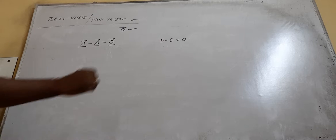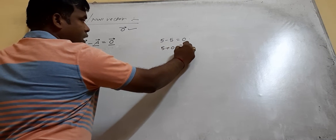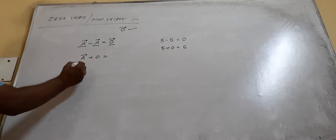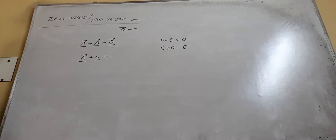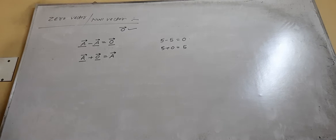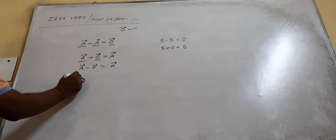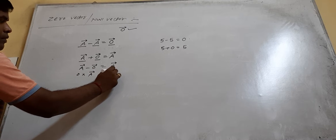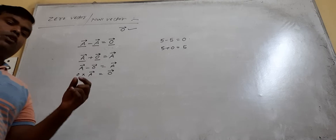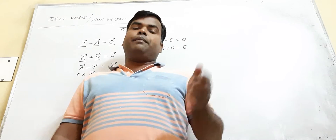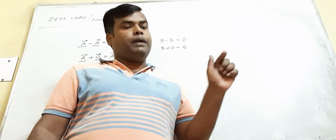Similarly, 5 plus 0 is 5. Here, you cannot write scalar zero with a vector, so we have to write zero vector. That means A vector plus zero vector equals A vector. Similarly, A vector minus zero vector equals A vector. The conclusion is that zero vector plays the same role in vectors as zero plays in scalars.